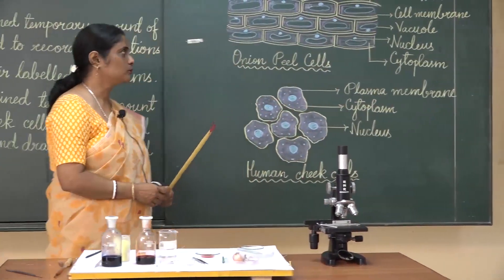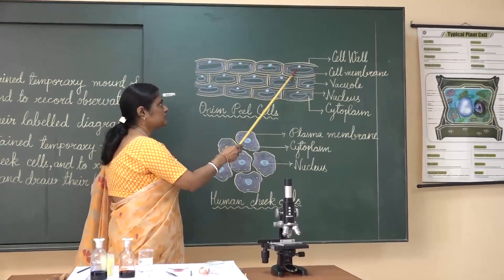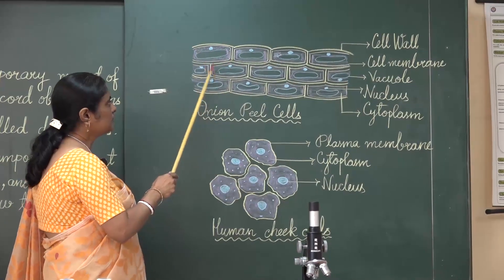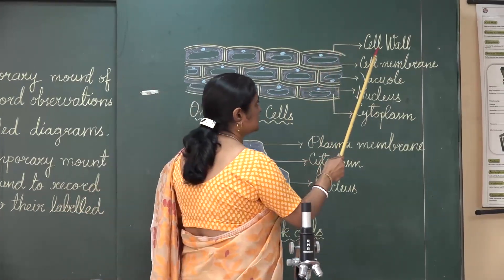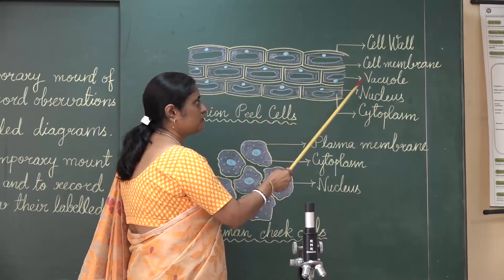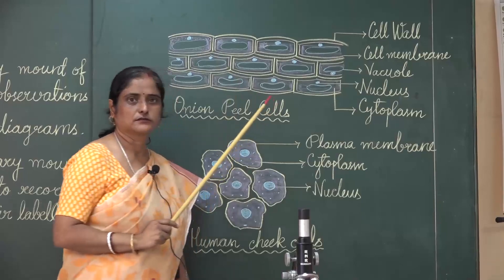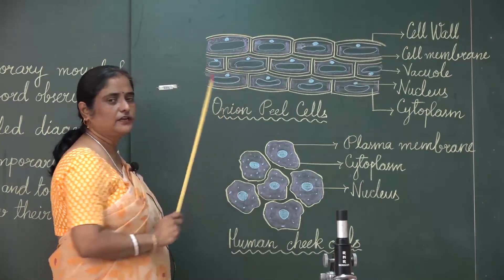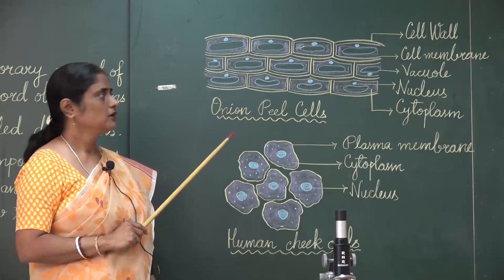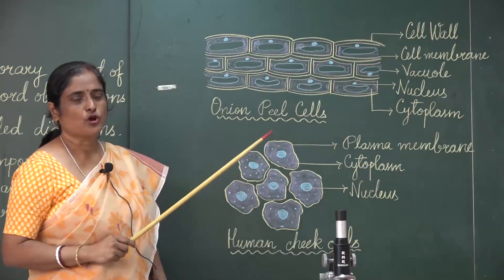What do we observe under the microscope? We see this picture under the microscope. These small compartments are called cells — these are the cells of the onion peel. The yellow ones represent the cell wall. Inner to the cell wall, we find the cell membrane, and inside the cell membrane we find cytoplasm, where there is a large vacuole and a nucleus. The cells do not have intercellular spaces. Such cells found in the onion peel are called parenchyma type of cells. These are living, matured cells with a large vacuole and a prominent nucleus.